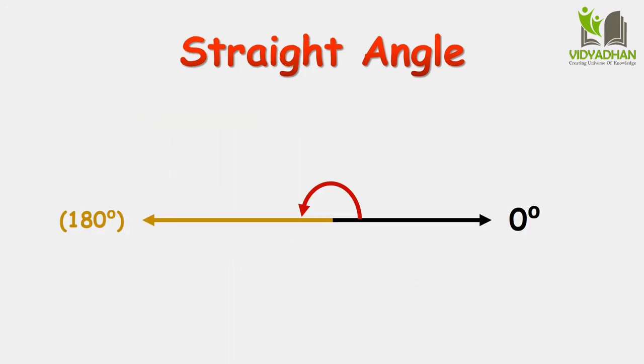Straight Angle: An angle whose sides lie in opposite directions from the vertex in the same straight line and measures 180 degrees is called a straight angle.